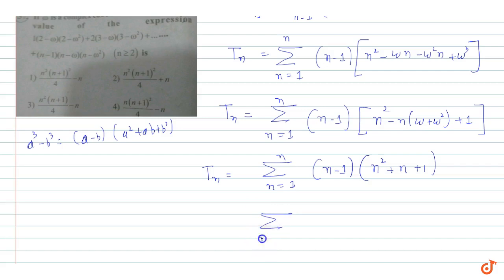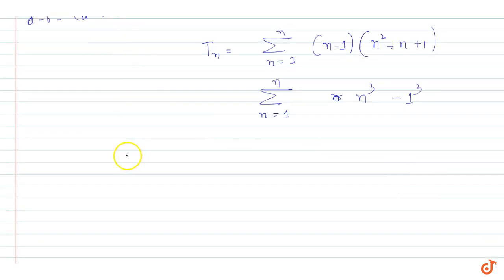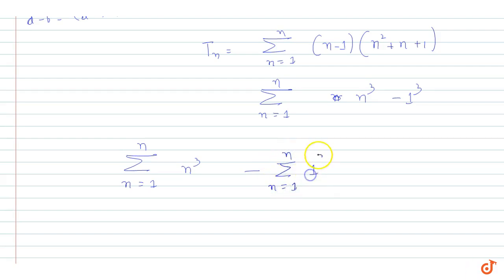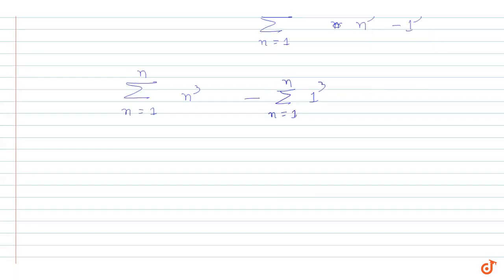So the summation becomes Σ(n=1 to n) of (n³ - 1), which splits into Σn³ minus Σ1 (summed n times). Using the formula for the sum of cubes of first n natural numbers: [n(n+1)/2]², minus n.